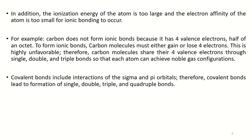In addition, when the ionization energy of the atom is too large and the electron affinity is too small for ionic bonding to occur, covalent bonding takes place instead. For example, carbon does not form an ionic bond because it has four valence electrons — half of an octet. To form an ionic bond, carbon would have to either gain or lose four electrons, which is quite difficult and an unfavorable condition for the carbon atom.